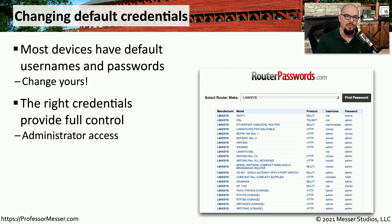One of the challenges with DHCP, or the Dynamic Host Configuration Protocol, is that there's no security built in to the DHCP specification. We can add additional security in our switches by enabling DHCP snooping. This allows us to track IP addresses and MAC addresses on this Layer 2 device. The switch would effectively become a DHCP firewall.